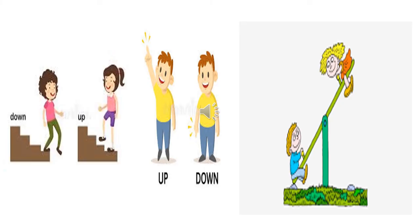Up and down. She is climbing up the stairs. She is climbing down the stairs. She is going down the stairs. His hand is up. His hand is down. His finger is pointing up. His finger is pointing down. The seesaw goes up and down.